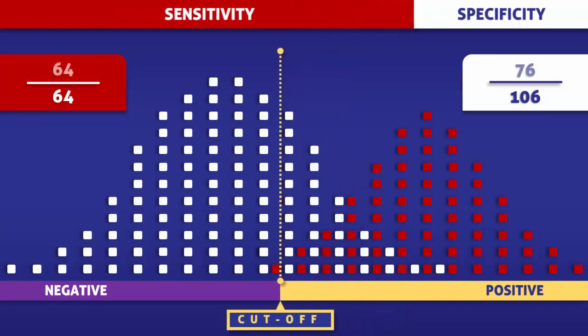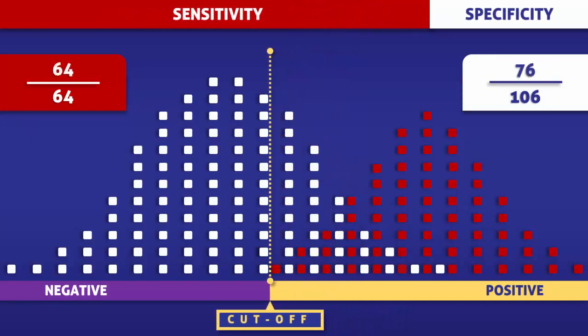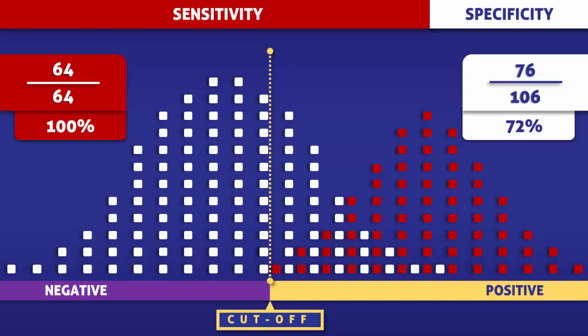By shifting the cutoff level to the left, we find that all of the red squares are now to the right of the yellow line. This means that everyone with the disease would test positive, and thus the sensitivity of the test would be 100%. However, the number of white squares to the right of the cutoff line has also increased, meaning more people without the condition would incorrectly test positive and the specificity of the test would be lower. So at this cutoff level, there would be a greater number of positive tests, both true and false, which would lead to a higher sensitivity but a lower specificity.